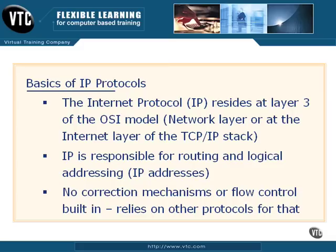What does IP do? We know from basic networking that IP is responsible for routing and logical addressing. It uses IP addresses — Internet Protocol addresses — such as 134.62.136.40, for example, instead of MAC or hardware addresses. That's what layer 2 does; it uses MAC addresses. IP uses IP addresses.